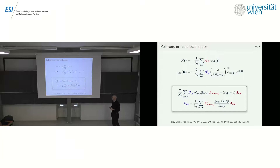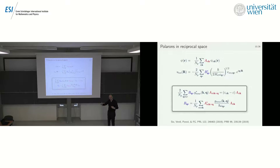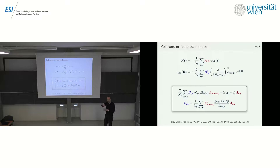When you write a discrete summation over wave vectors, you are describing a polaron in a periodic supercell. For example, a four-by-four-by-four k-point grid means studying a polaron in a supercell of four-by-four-by-four unit cells — not a single polaron, but a periodically repeated array of polarons.